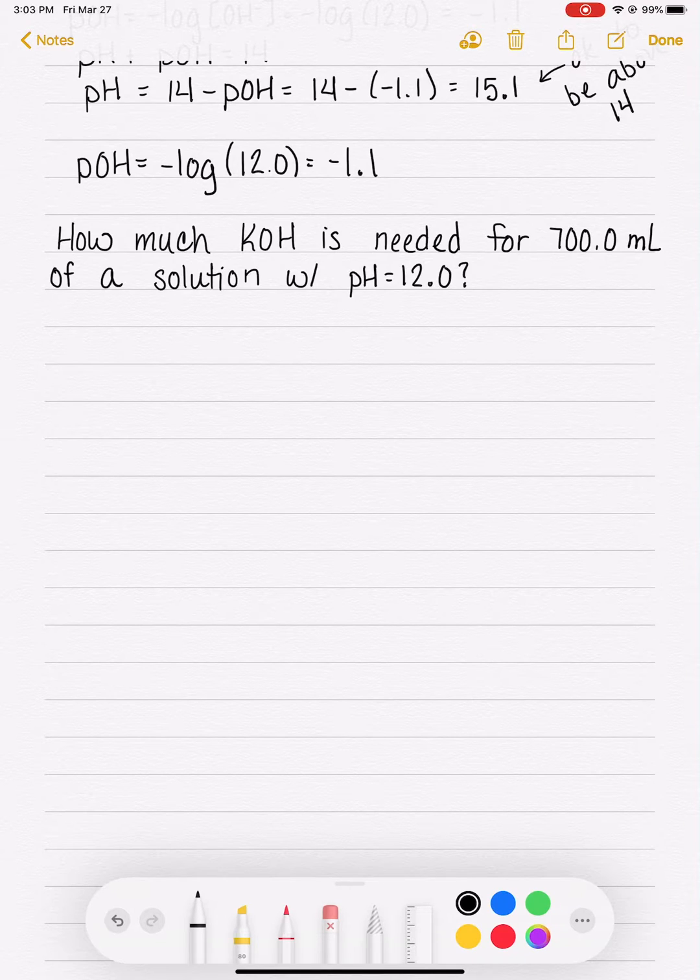To solve this problem, we are going to first of all recognize that we are dealing with KOH, which is a base, not an acid. So what we really want to be thinking about is in terms of pOH because that's easier when we're dealing with bases. So if we want a solution that has a pH of 12,